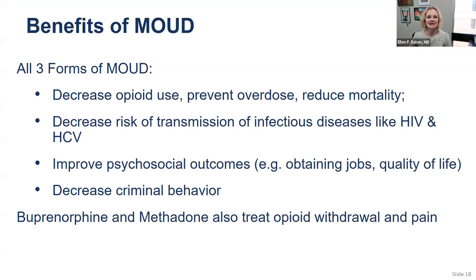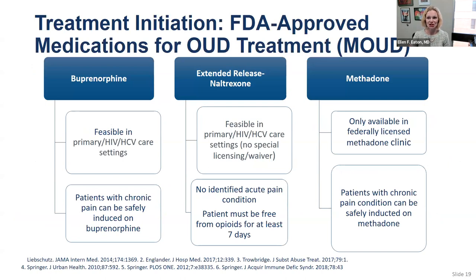All three forms of FDA-approved meds for opioid use disorder decrease opioid use, prevent overdose, and reduce mortality. They decrease the risk of transmission of infectious diseases like HIV and hepatitis C. They improve psychosocial outcomes like the ability to get and keep a job, improve quality of life, decrease criminal behavior — which is essential to keeping people in the community engaged in HIV care. Buprenorphine and methadone can also treat opioid withdrawal and pain, which is increasingly common in patients with HIV as we see patients live longer with neuropathic and musculoskeletal pain.